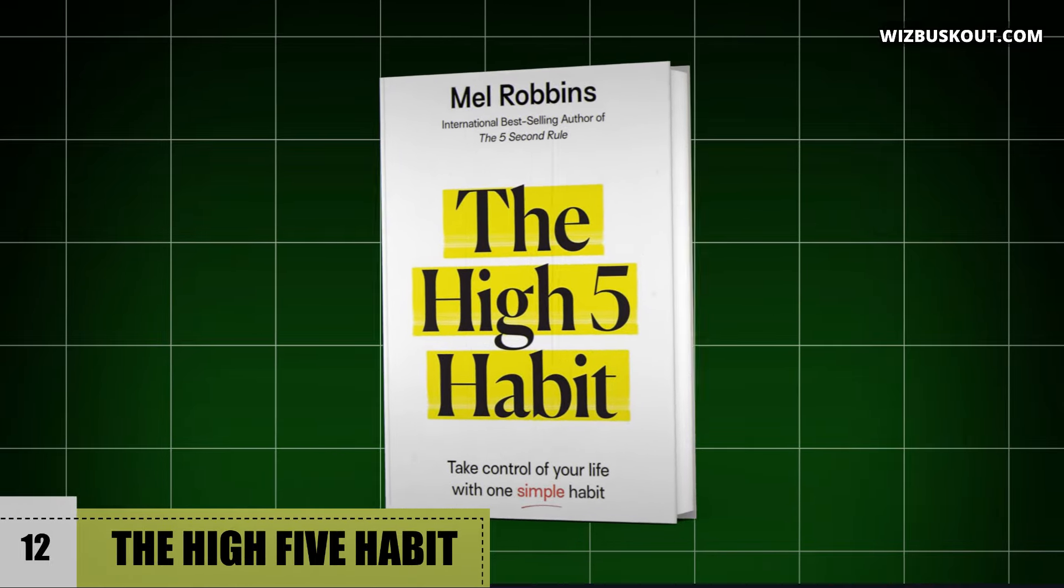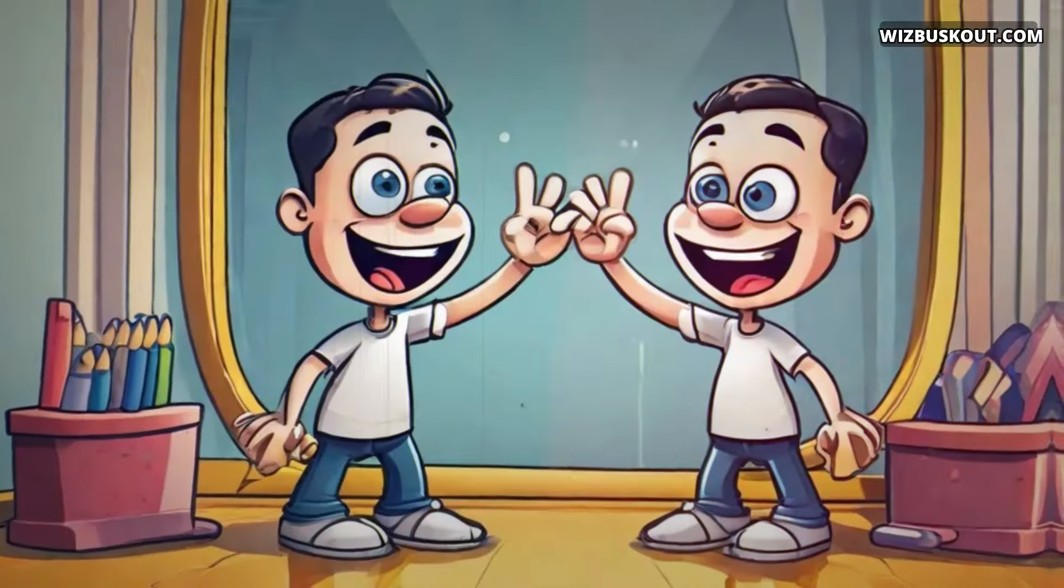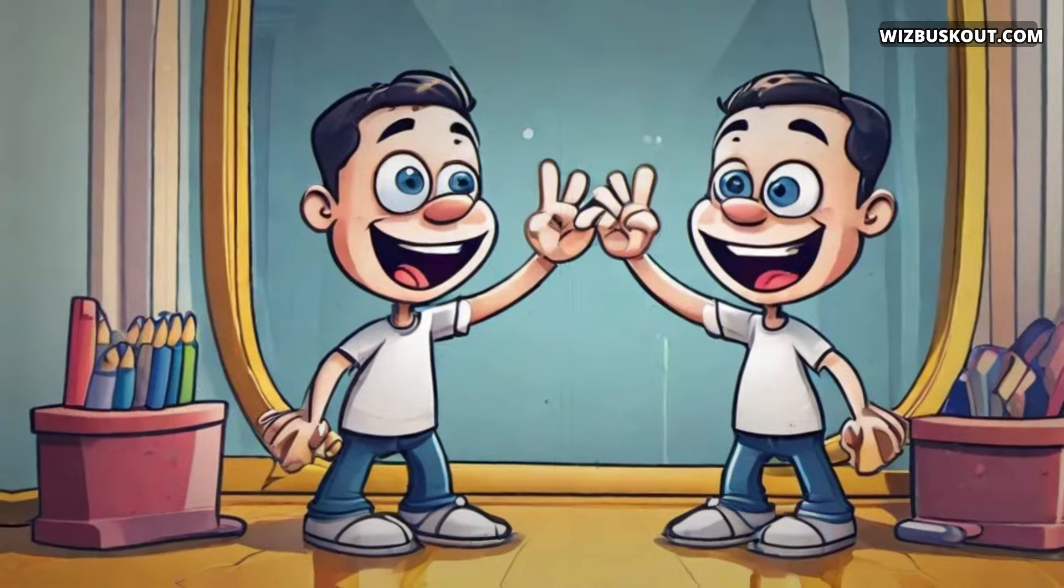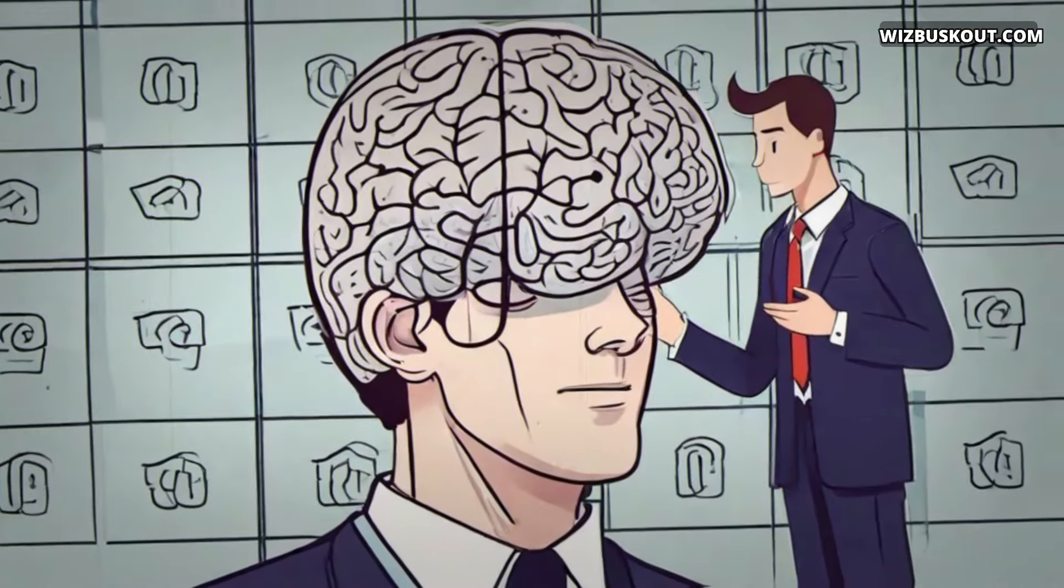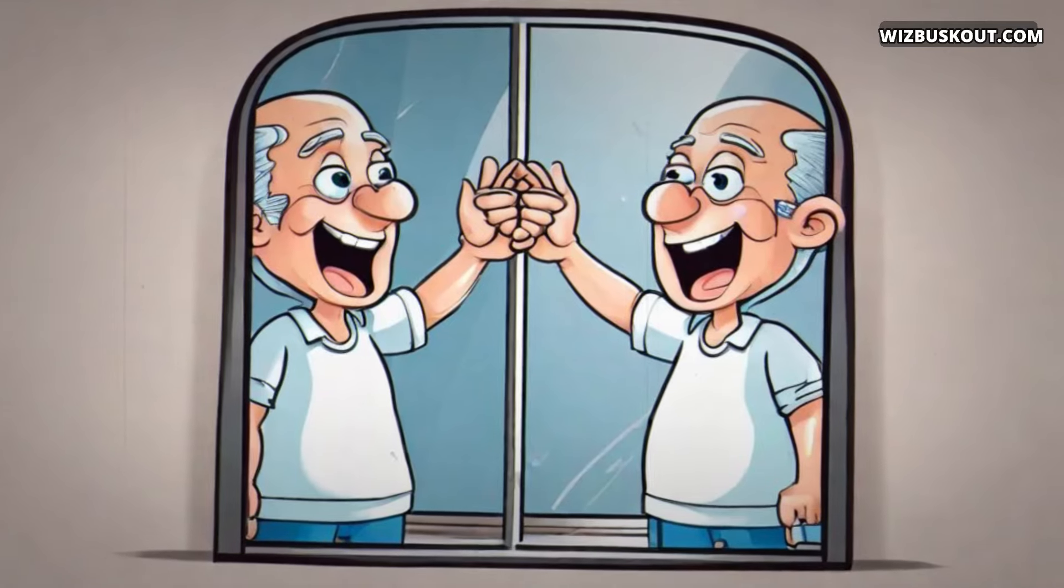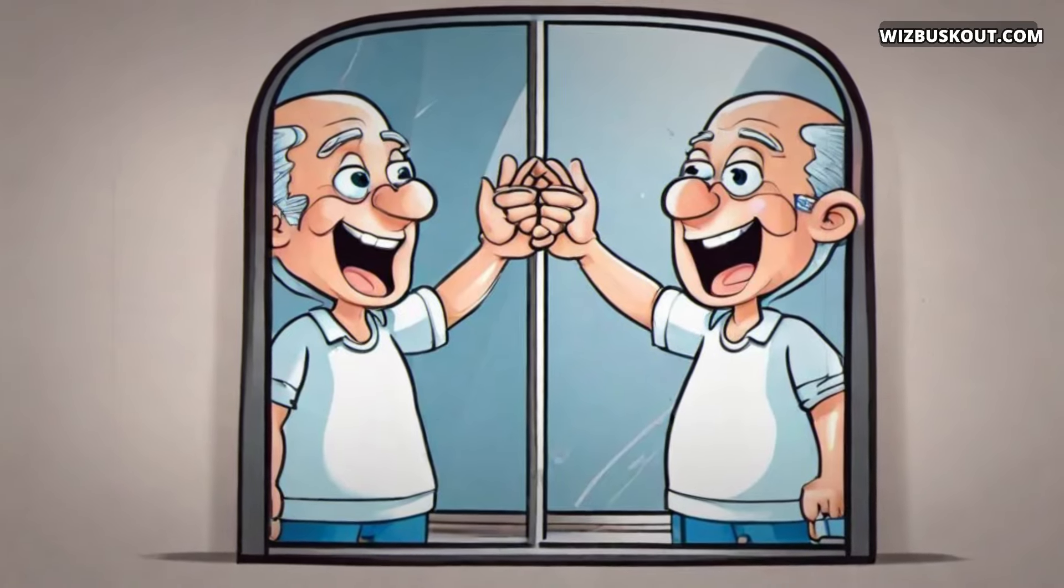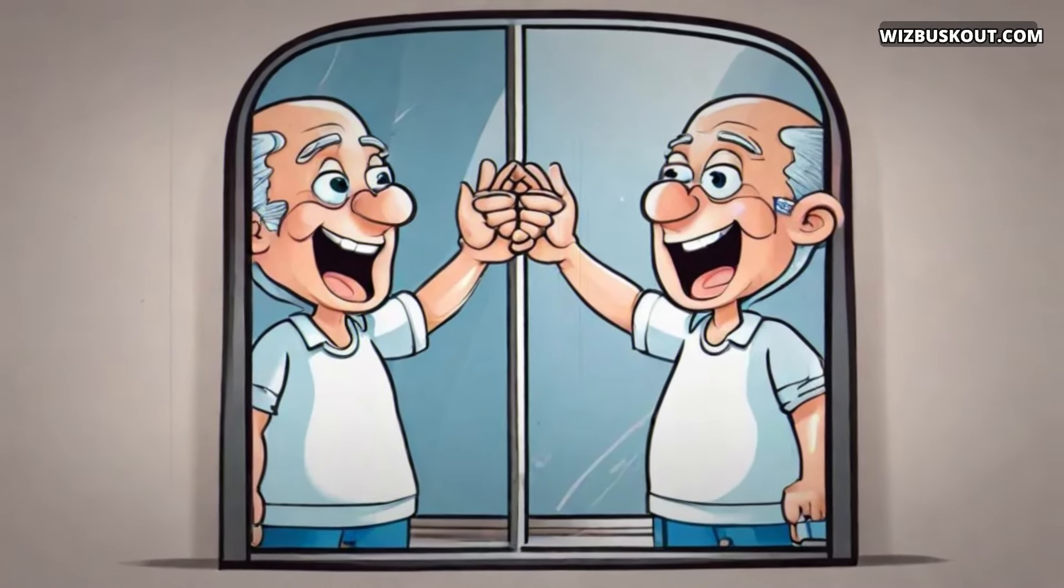Number 12, The High Five Habit by Mel Robbins. In this book, Robbins introduces the concept of the high five, a simple yet powerful gesture that rewires your brain for success and positivity. It's like giving yourself a mini celebration every time you accomplish something, no matter how small. A high five habit doesn't just stop at changing your habits. It's about changing your mindset too.